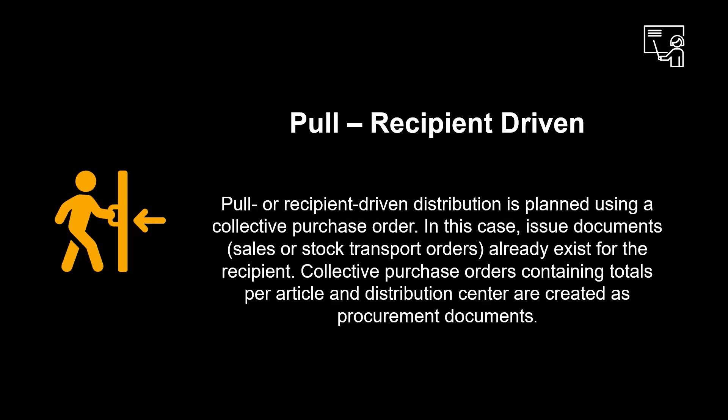Pull or recipient-driven distribution is planned using a collective purchase order. In this case, issue documents — sales or stock transport orders — already exist for the recipient. Collective purchase orders containing totals per article and distribution center are created as procurement documents.